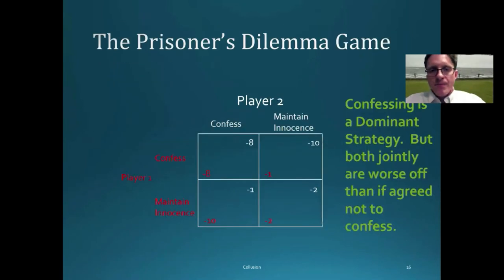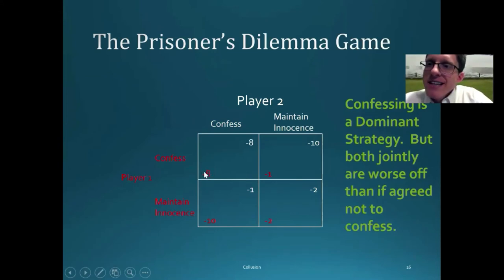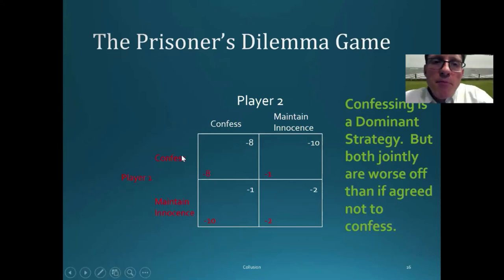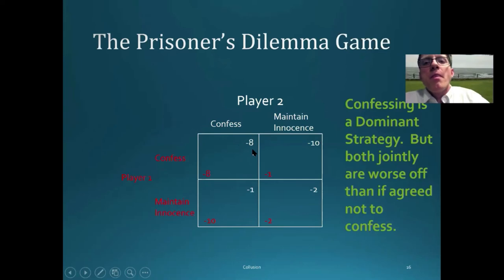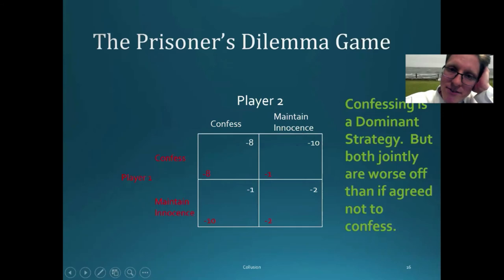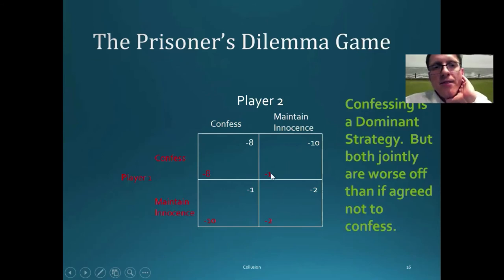The payoffs are written as negative numbers because you want the least large negative number — the least time in jail. If they both confess, each gets eight years in jail, a payoff of minus eight. If player two maintains innocence but player one confesses, player two gets 10 years in jail, a payoff of minus ten, and player one who confessed gets a payoff of minus one, indicating one year in jail.